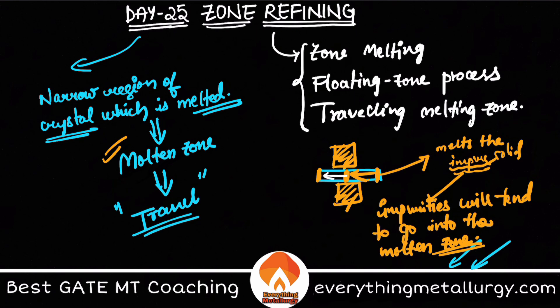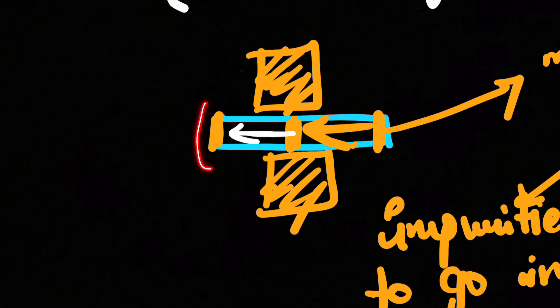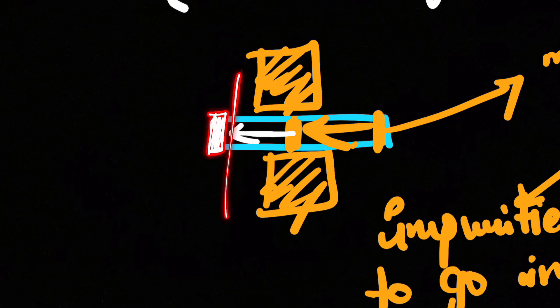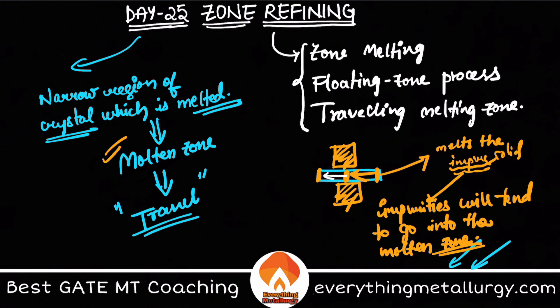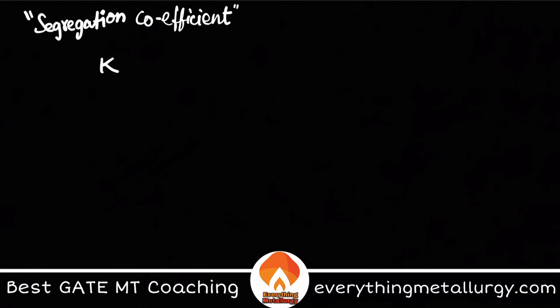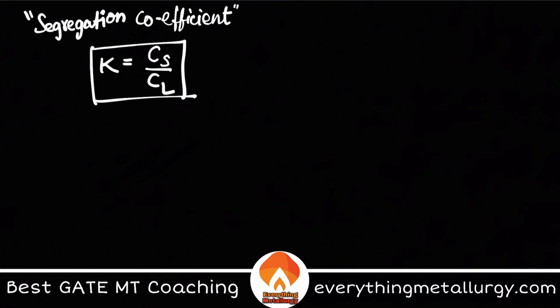The impurities will concentrate and go into one corner. As the molten zone travels, all the impurities present in the crystal will travel along with it and concentrate at one end. We then cut off that end so the impurities are removed and we are left with pure crystals. The principle behind this is a concept called the segregation coefficient.